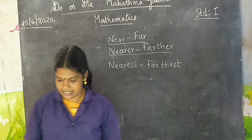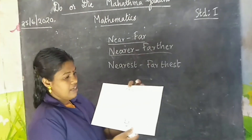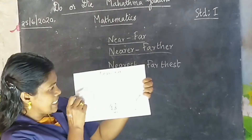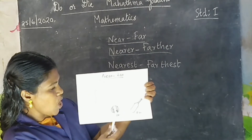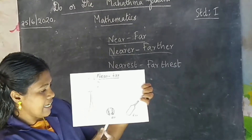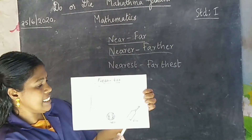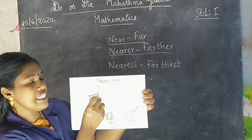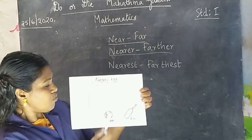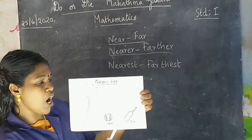Let us see some examples. Here a tree, a ball, and a bat. Can you see? A tree, a ball, and a bat. Near means adutth, far means dhuri. Which one is near this tree? Ball or bat?